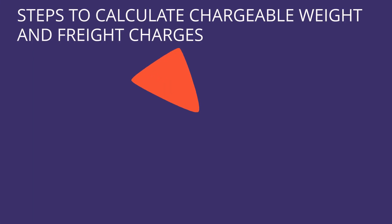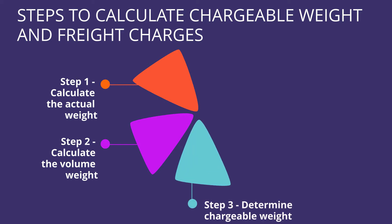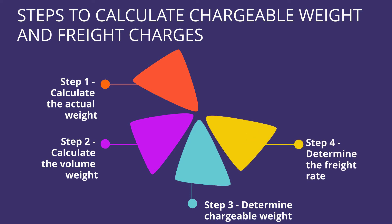There are five steps for calculating your trucking rates and your chargeable weight. Step one is calculate the actual weight. Step two is calculate the volume weight. Step three is determine your chargeable weight. Step four is determine the freight rates. And step five is to calculate your freight charge.